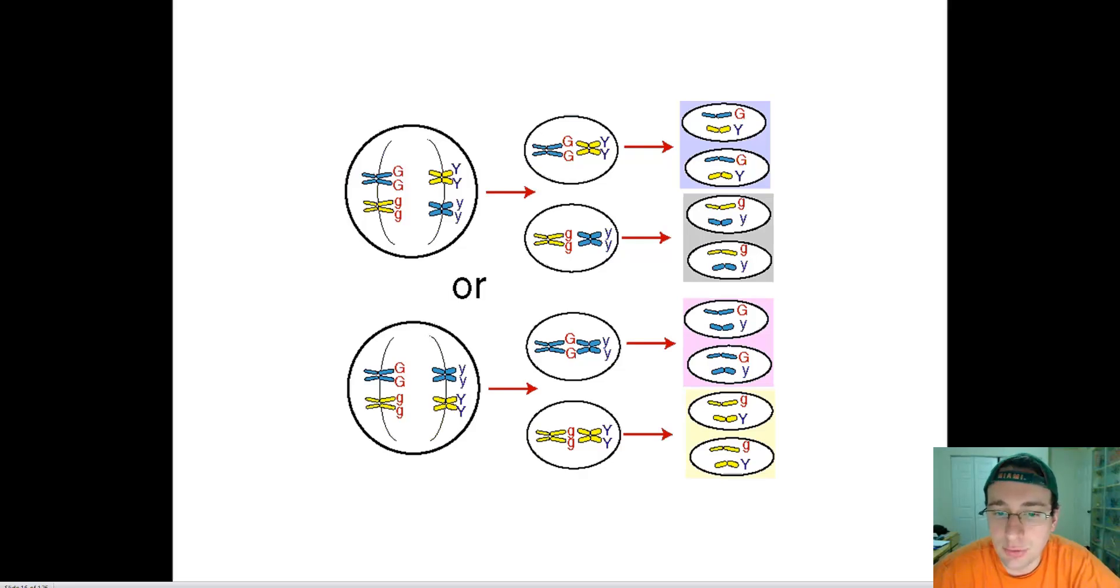In our last video we talked about how Thomas Hunt Morgan studied Drosophila melanogaster, the little fruit flies, and looked at specific traits in these fruit flies. He realized that chromosomes played a role in the inheritance of traits across generations, the same way that Mendel had referred to in his studies.